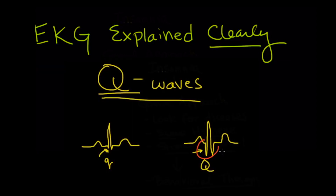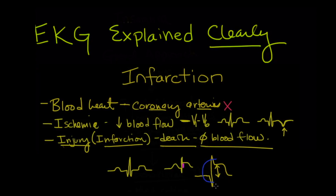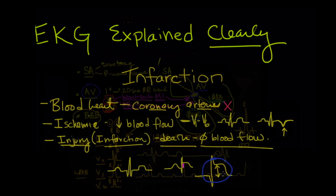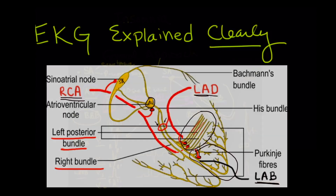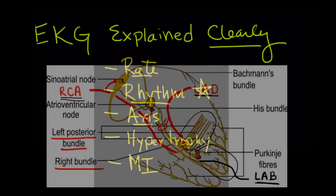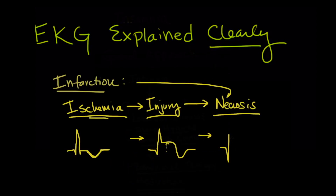We'll talk about Q waves, ST segment and T wave changes that we see with ischemia, bundle branch blocks and fascicular blocks, and then at the end we'll put it all together and teach you how to systematically read an EKG.